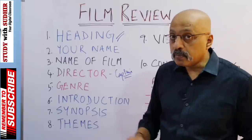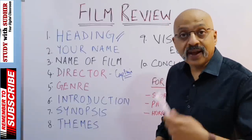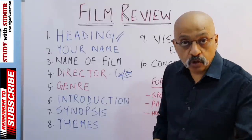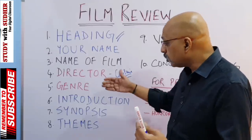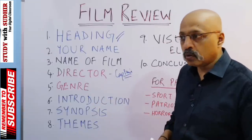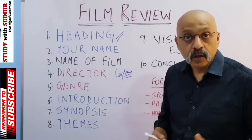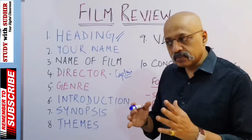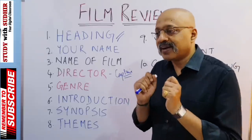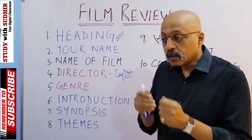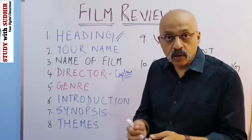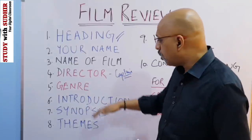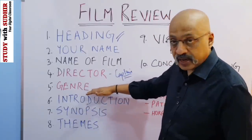The fifth element is the genre. What do I mean by genre? It could be a comedy film, an action film, a horror movie, a science fiction movie, or a mythological movie. You need to know the genre so the reader understands what kind of movie it is. It always helps the reader because at the end of the day, you are not just giving your opinion — you are also trying to help the reader form an opinion about whether he or she should actually spend that money to go to the theatre to watch the movie.